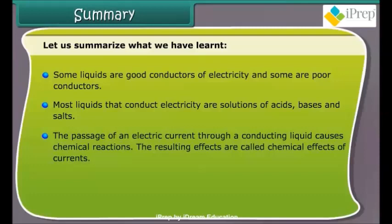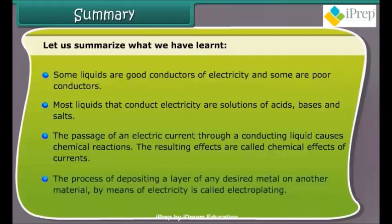The passage of an electric current through a conducting liquid causes chemical reactions. The resulting effects are called chemical effects of currents. The process of depositing a layer of any desired metal on another material by means of electricity is called electroplating.